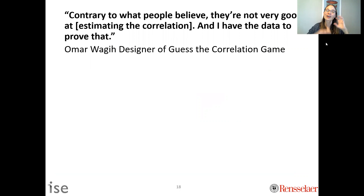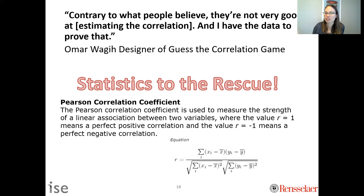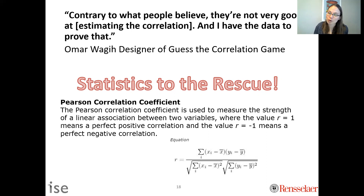Don't worry if you're not good at it visually — we have statistics. Excel, R, and other tools can calculate correlation coefficients quickly. If you're unsure whether your data has a trend or is stationary, calculating a correlation coefficient can help identify that.